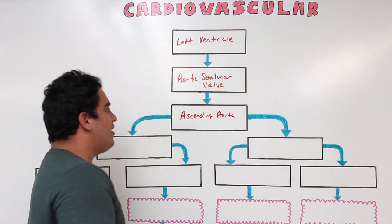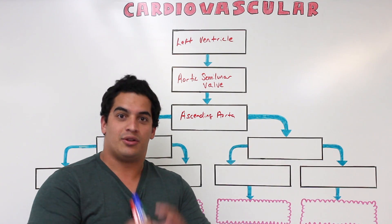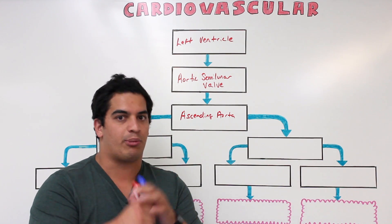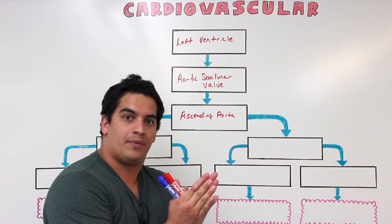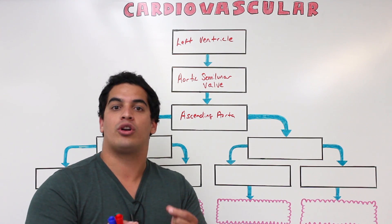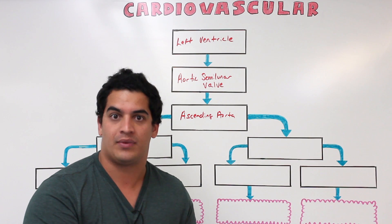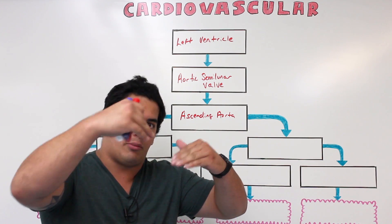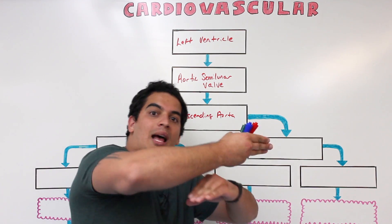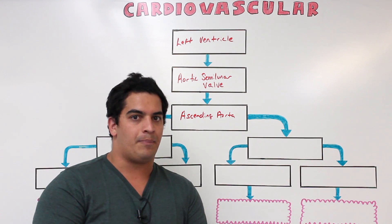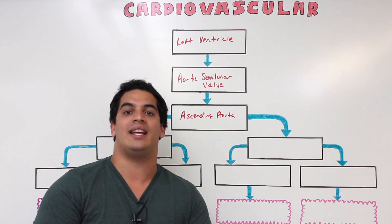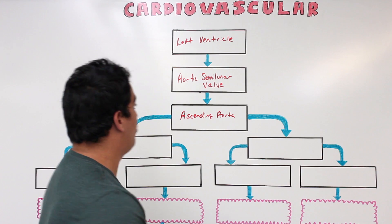Right behind those valves there are tiny little arteries called the right and left coronary arteries. Whenever the ventricles are contracting, they're pushing the blood out into the aorta during systole. Whenever the heart goes into diastole, it undergoes relaxation. The valve flaps snap shut to prevent blood from flowing back into the left ventricle, and when it snaps those valves shut, it shunts that blood right into the coronary circulation. That means the myocardium is getting its oxygen supply when the heart is in diastole — when it's relaxing. That is super important.